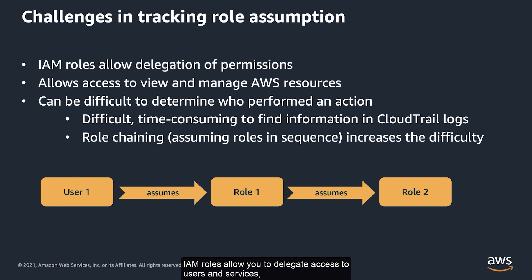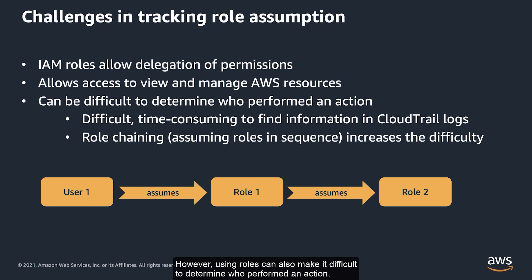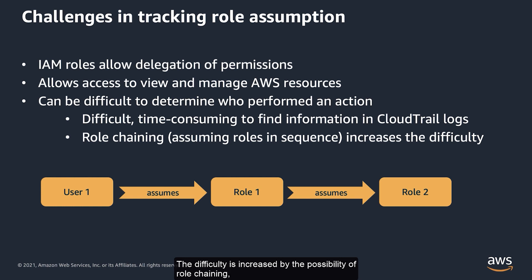IAM roles allow you to delegate access to users and services so that they can manage and get access to your AWS resources. However, using roles can also make it difficult to determine who performed an action. Uncovering this information from CloudTrail logs is difficult and time consuming. The difficulty is increased by the possibility of role chaining, where a resource assumes multiple roles in sequence.